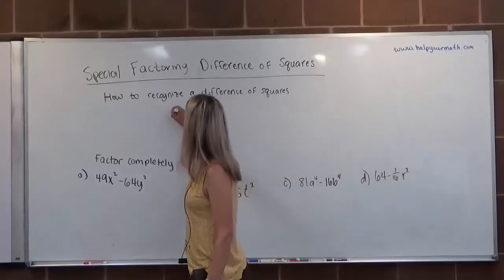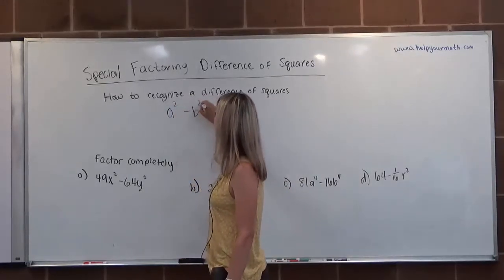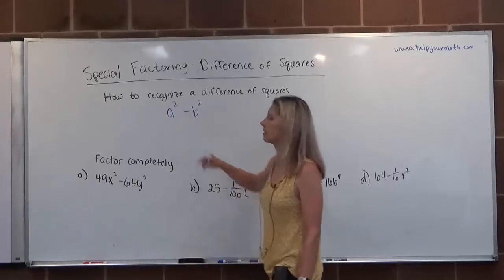A difference of squares looks like this: perfect square minus perfect square. So there's our two squares, there's the subtraction.